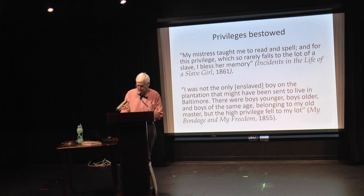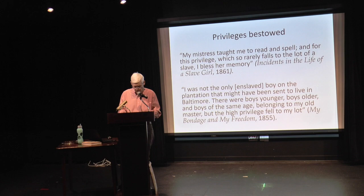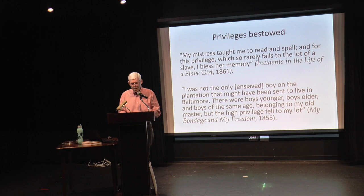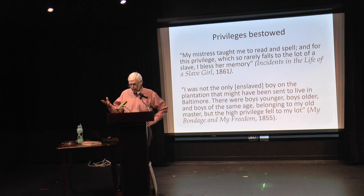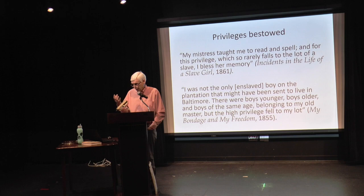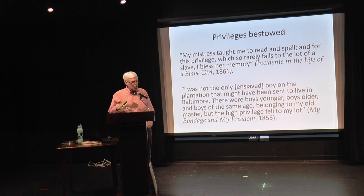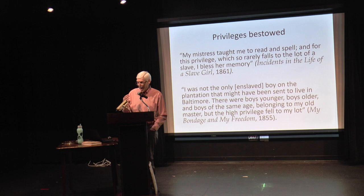When Frederick Douglass was eight years old, he was sent from the boondocks of Maryland's Eastern Shore to become a domestic slave in the big city of Baltimore — a huge advantage. In his second autobiography, Douglass recalled: 'I was not the only enslaved boy on the plantation that might have been sent to live in Baltimore. There were boys younger, boys older, boys of the same age belonging to my old master, but the high privilege fell to my lot.' From their youth, both Harriet Jacobs and Douglass received significant advantages, grew up in urban areas, and had deeply supportive extended families, including grandmothers who made a huge impact on their lives.